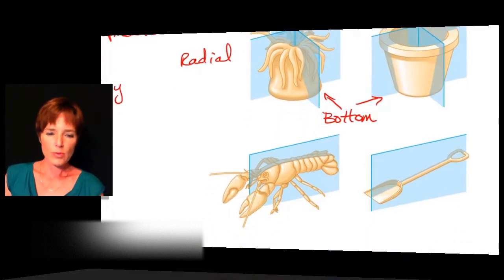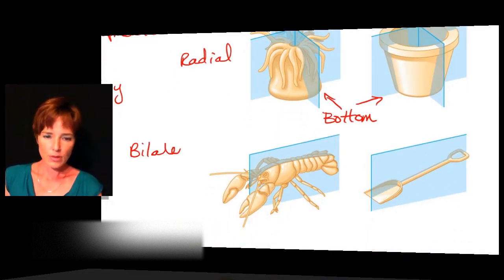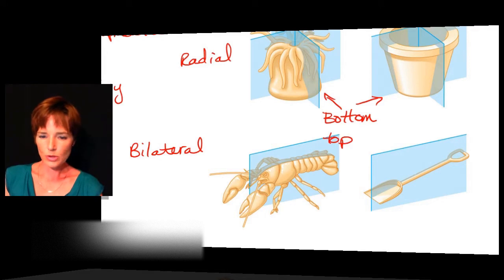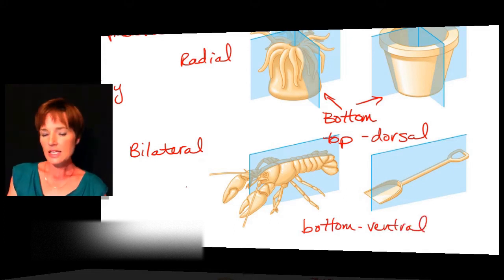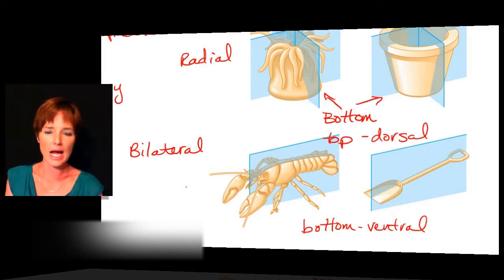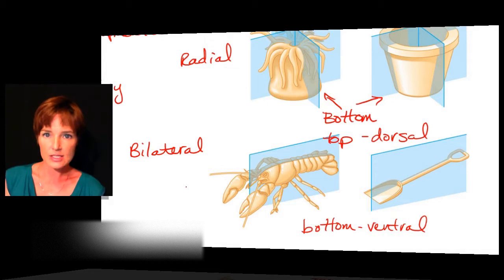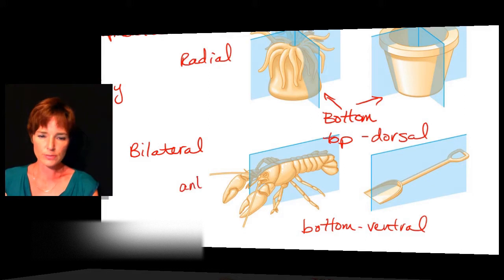After that we ended up with what we call bilateral symmetry. With bilateral symmetry, you have a top and a bottom — the top we're going to call the dorsal and the bottom we will call the ventral. In addition to this, you also have a front and a back. If you look at this crustacean — this shrimp — you have the head end and also the rear end. The head or front is what we would call the anterior, and the back is what we're going to call the posterior.